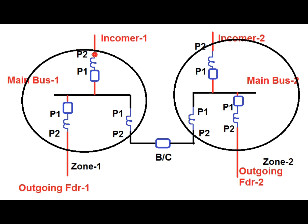Here P1 of all the CTs is connected towards the bus side, and P2 is connected towards the line side for the incomer and outgoing feeder. For the bus coupler CT, P2 is connected towards the bus coupler breaker. The CT shorting arrangement is such that S1 is shorted and the S2 terminal is taken to the bus bar relay. Since the protective object is the bus, CT shorting is done towards the protective object, which is the bus, and that is why S1 is shorted.